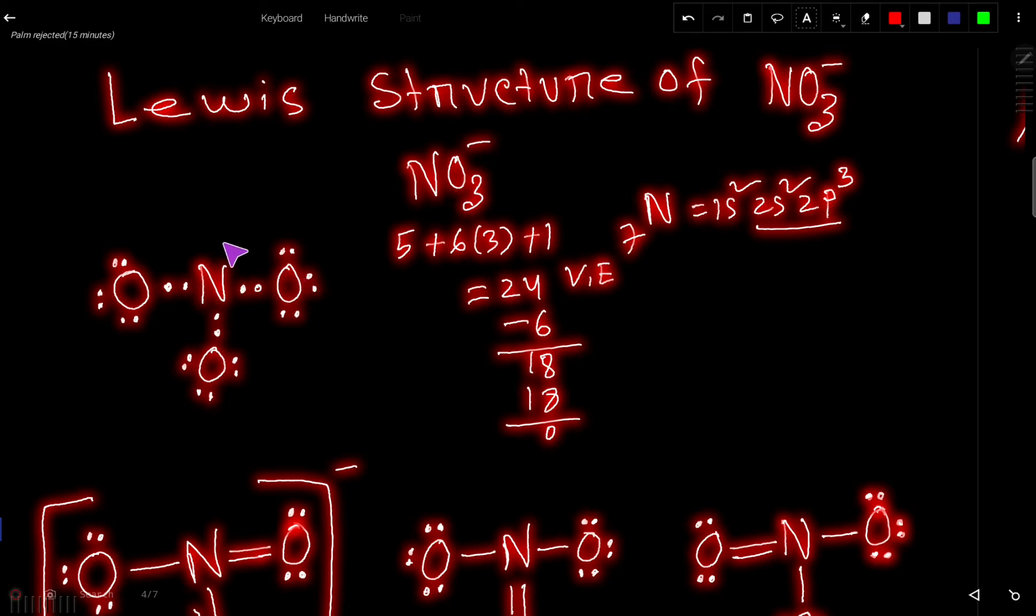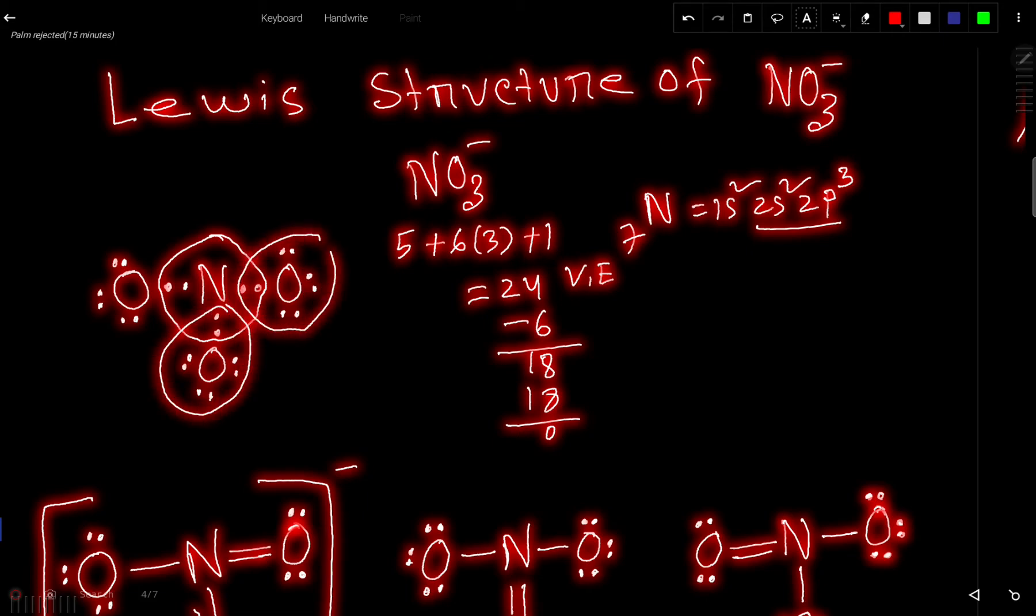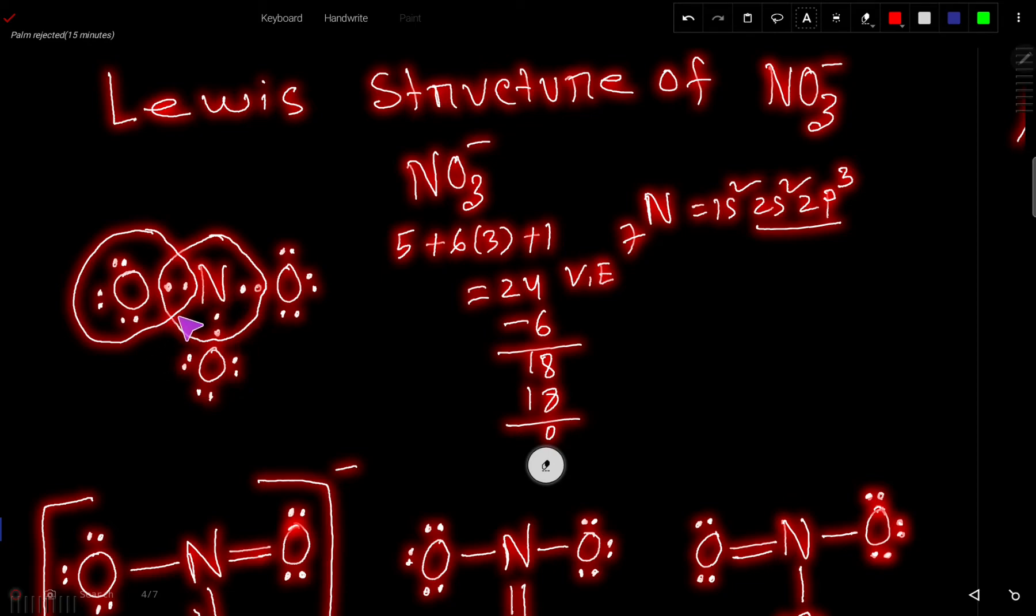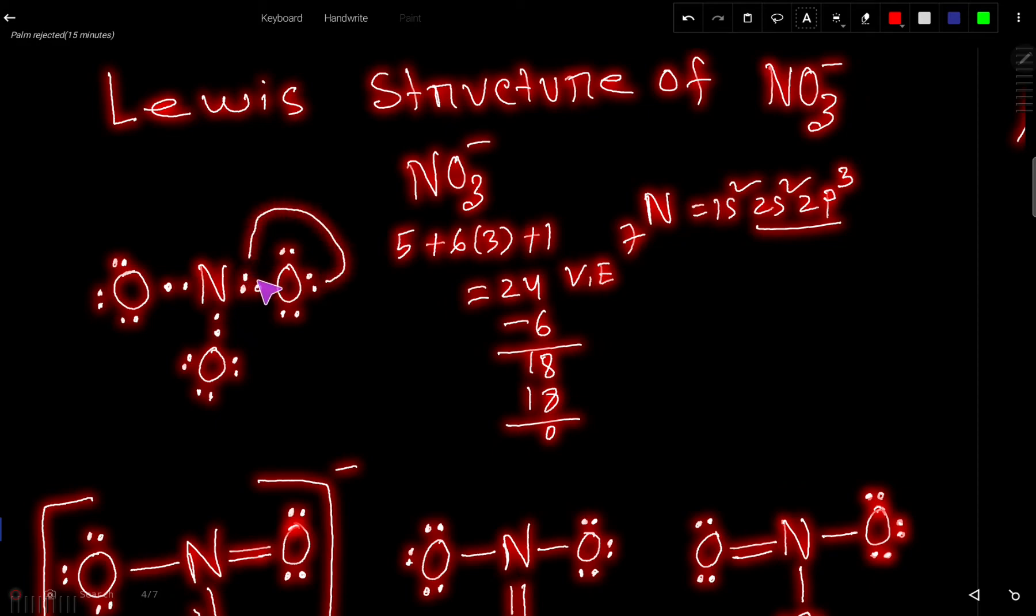Now look, this nitrogen, central atom nitrogen has six valence electrons. But this oxygen, this oxygen, and this oxygen has eight valence electrons. Now we need to satisfy the octet for central atom. So how can you do that? You can do this by moving lone pair as bond pair.